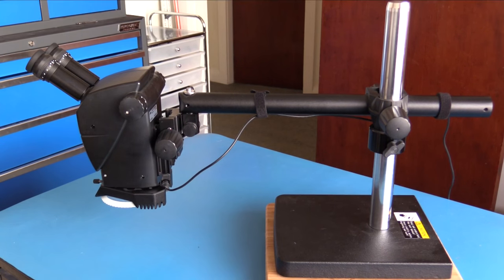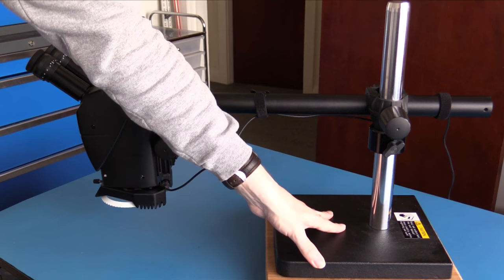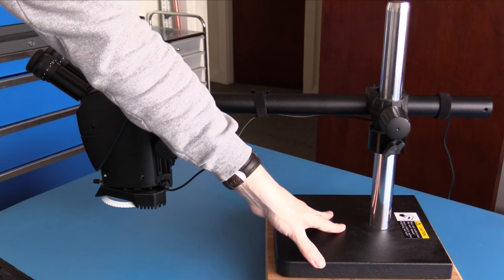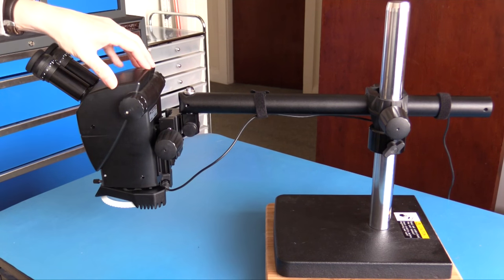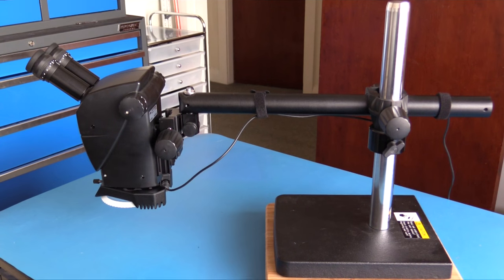This microscope can either be purchased with the stand, the Leica A60S, or it can be purchased with a flex arm, the Leica A60F. Both the Leica A60S and the Leica A60F share the same microscope head. It is only the stand that is different.